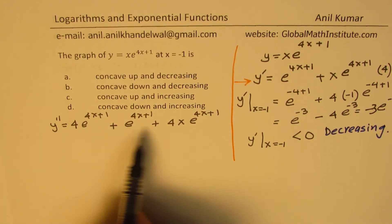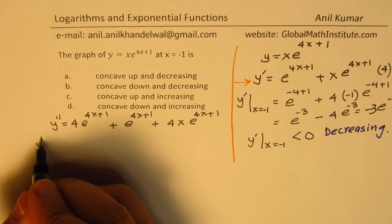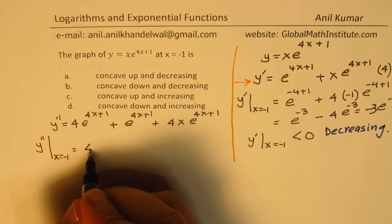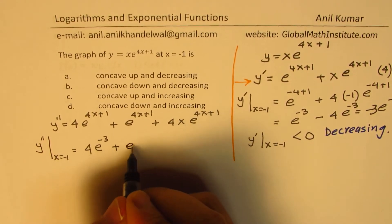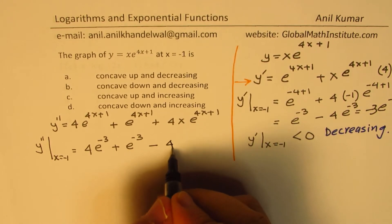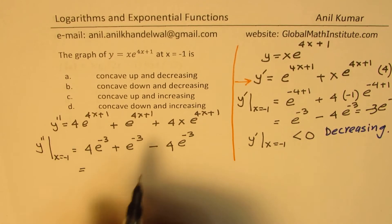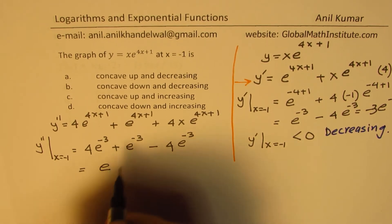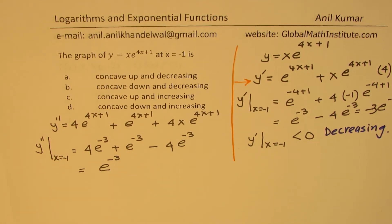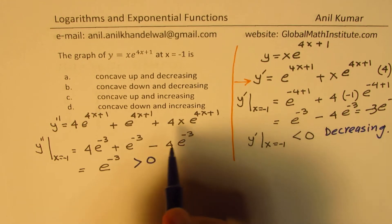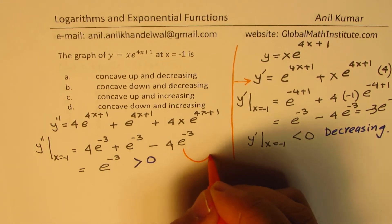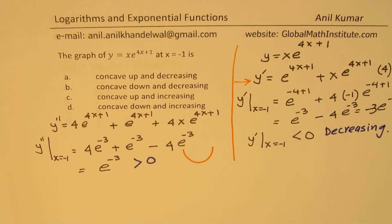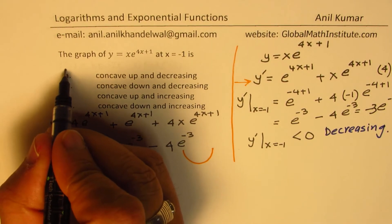We need to check whether the second derivative is positive or negative at x equals minus 1. Substituting, we get 4·e to the power of minus 3, plus e to the power of minus 3, minus 4·e to the power of minus 3. The 4·e^(−3) terms cancel, leaving a positive value of e to the power of minus 3. Since this value is greater than 0, we have concave up.